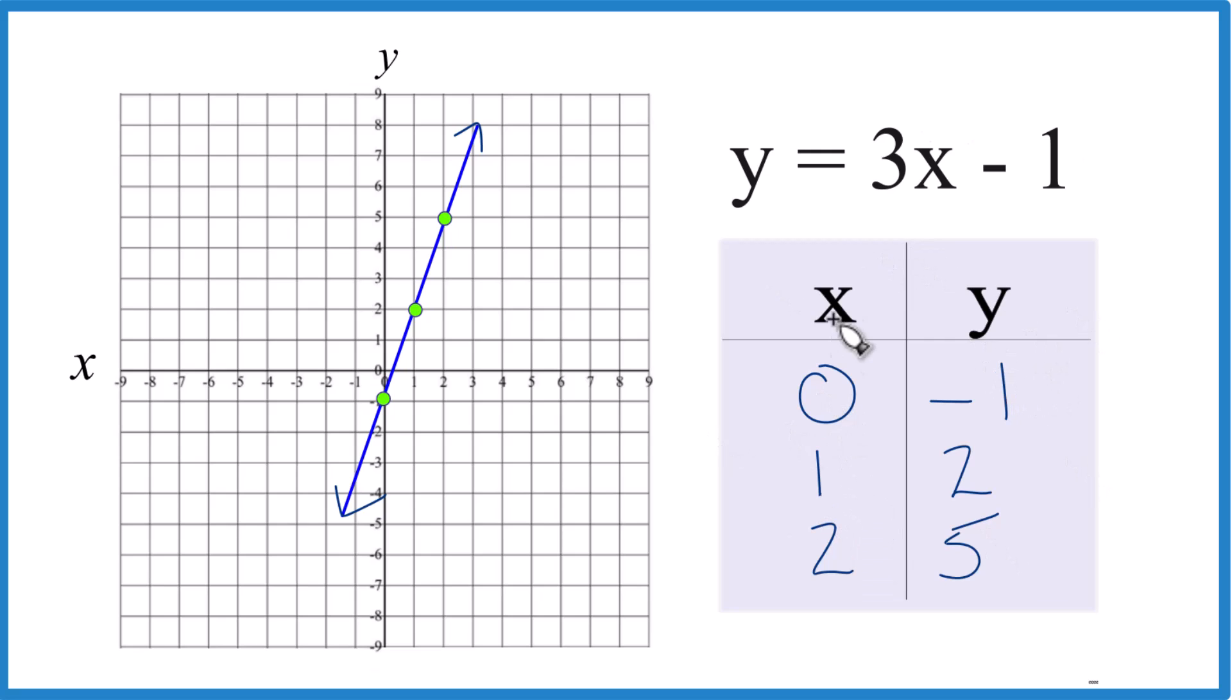Using a table of values. And again, you can put any values in, and you'll get a point for x and y that'll be on our line here for y equals 3x minus 1.